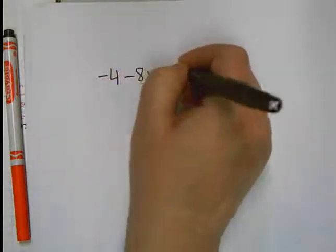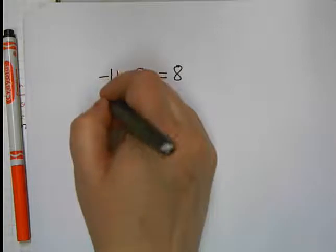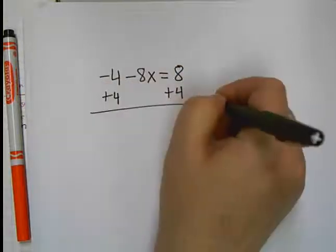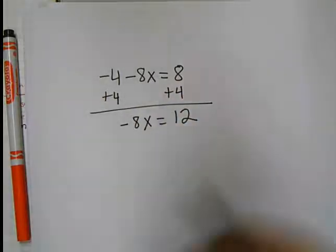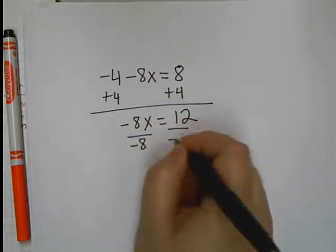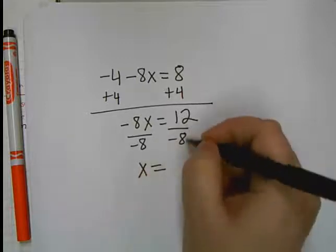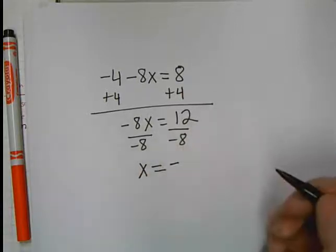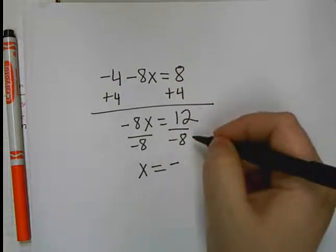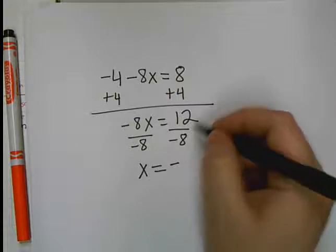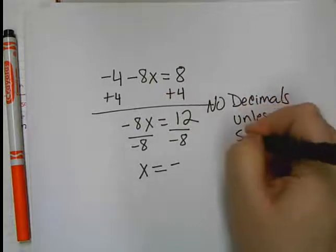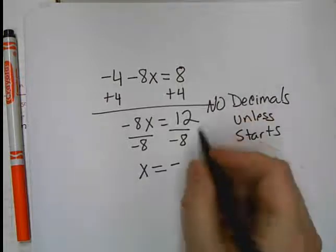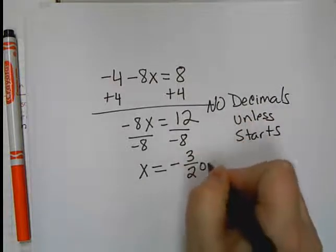Try another one. Okay, I'm going to add 4 to both sides. Negative 8X equals 12. Now, you may be saying, this isn't going to work out right. Well, you're right, it's not going to work out right. If I divide both sides by negative 8, 8 won't go into 12 evenly. So, I know my answer is going to be negative. And it's going to be a negative fraction. For equations, no decimals are allowed unless it starts with a decimal. So, you're going to leave this as a fraction in reduced form. And that would be negative 3 over 2 or negative 1 and 1 half.